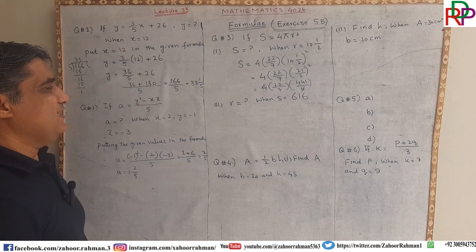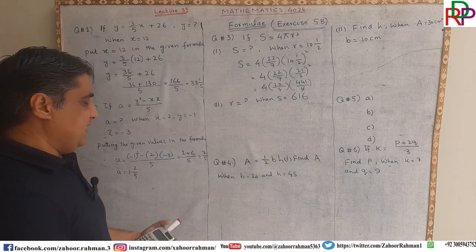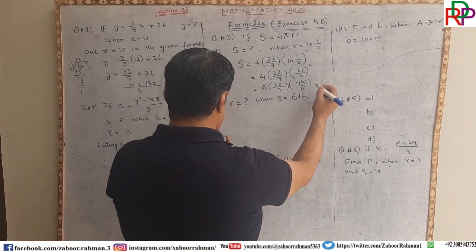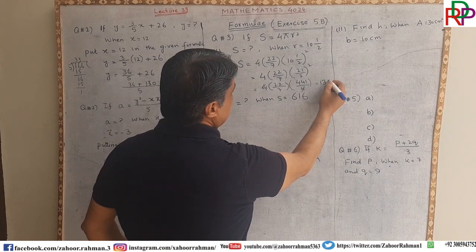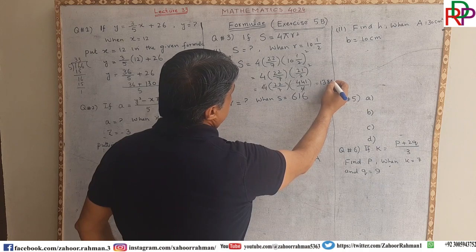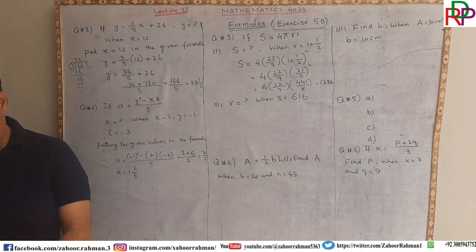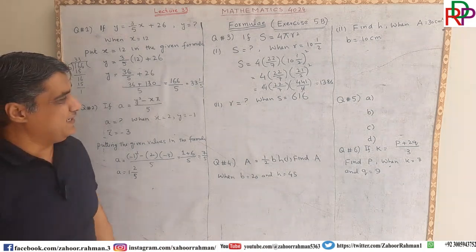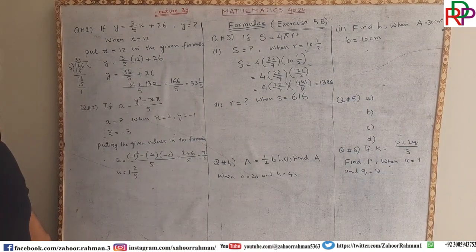Now 4 into 22 over 7 into 21 multiplied by 21 gives 441, divided by 4. This 4 cancels and we multiply through. The ultimate answer is 1386.